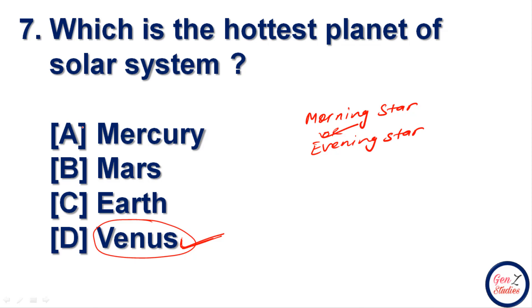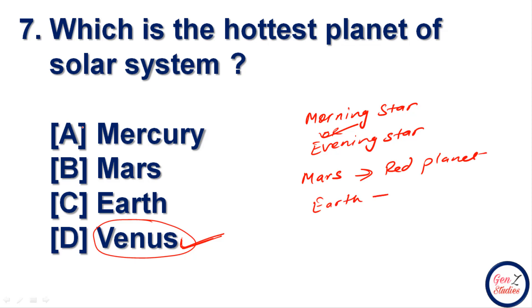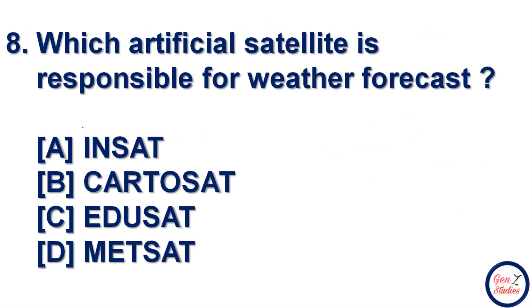Mars is also known as the red planet. Earth, where we live, is also known as the blue planet. So move to the next question.